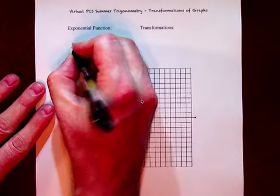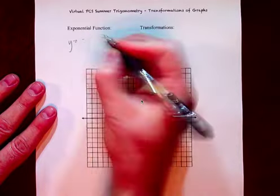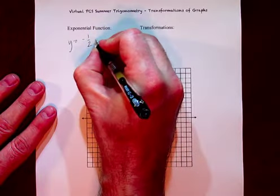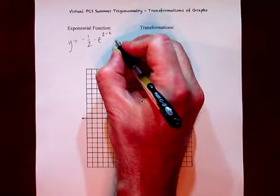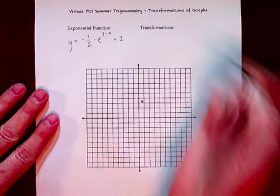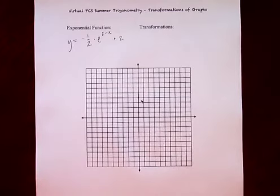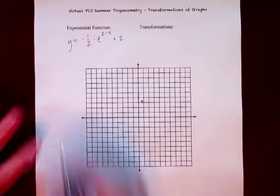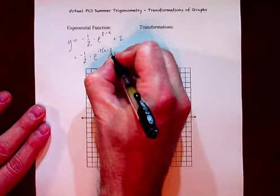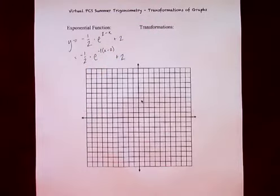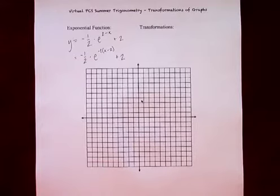Let's say y is equal to one half times e to the two minus x, plus two. Here we have of the six possible transformations, in this one we actually have five. And so if we want to make it a little bit clearer for ourselves, we take a negative one out of that two minus x. And when we do, we're functionally dividing by negative one, because factorization is a form of division — you're un-multiplying.